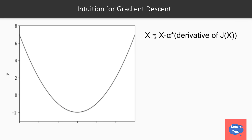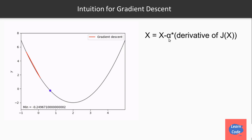We do this based on the equation x equals to x minus alpha — which is the learning rate — multiplied by the derivative of the cost function. So let's say we take a derivative at this point. The derivative at that point will be negative, and we'll get x equals to x minus alpha, a positive value, times a negative slope. So we get a positive value of x, and x moves in the forward direction.